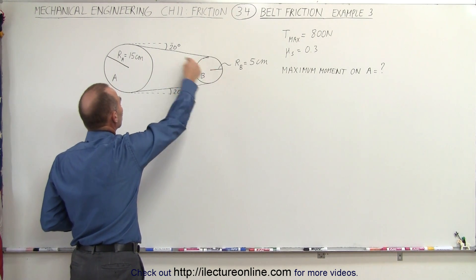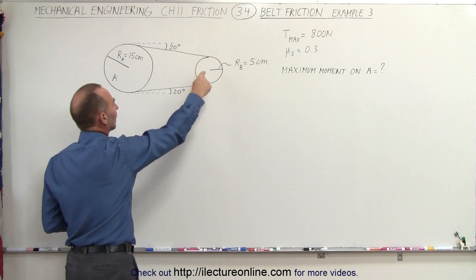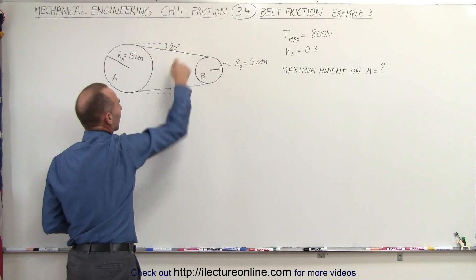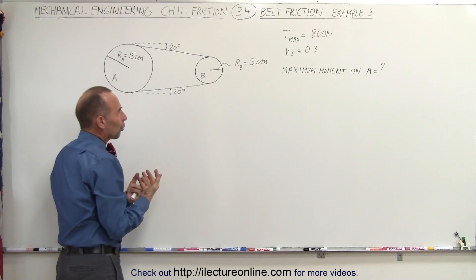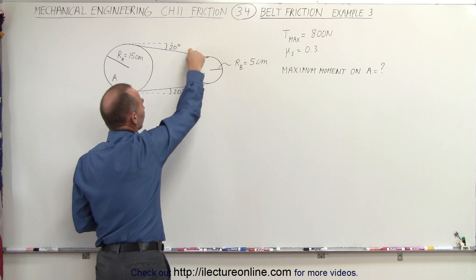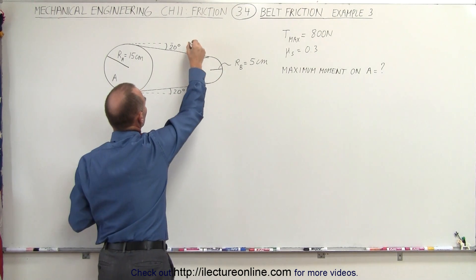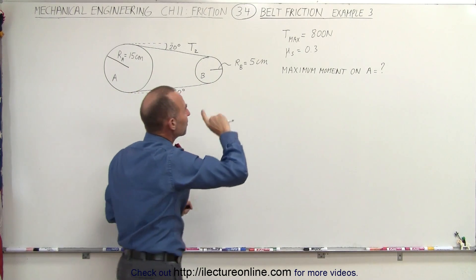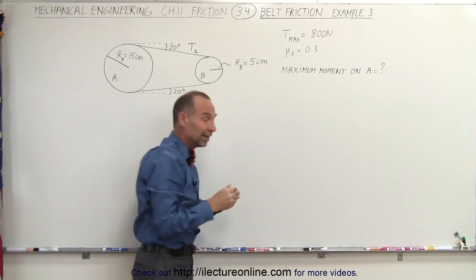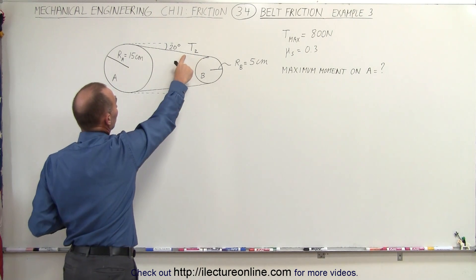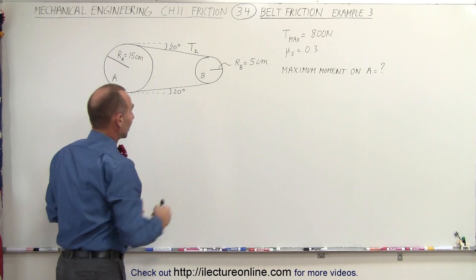Pulley B is driving pulley A by causing a tension to exist on this drive belt right here. That tension is created by pulley B turning, and so the tension here, let's call that T2, and T2 is going to be at maximum 800 Newtons. There's a limit as to how much force we can apply and how much tension we can put on this belt so we don't want that belt to break.